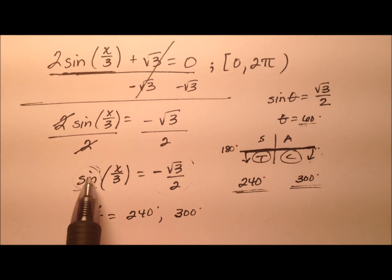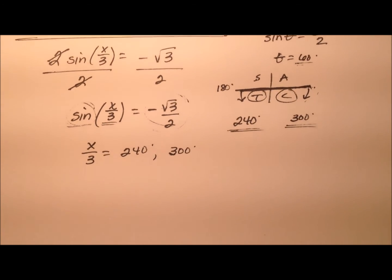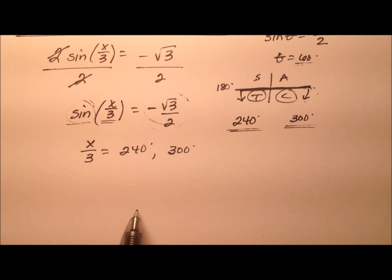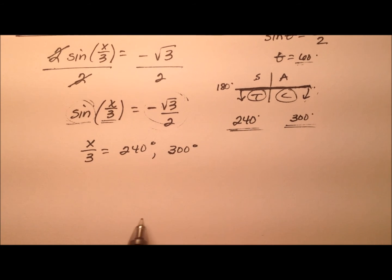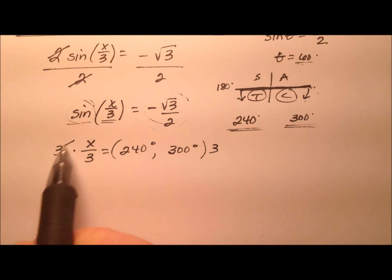I went ahead and found where sine was negative, so we took care of that part already. So now we just need to do this angle business. So x over 3 equals 240 degrees and 300 degrees. Let's multiply both sides by 3 to isolate that x.